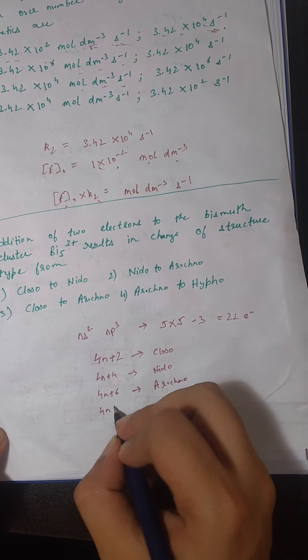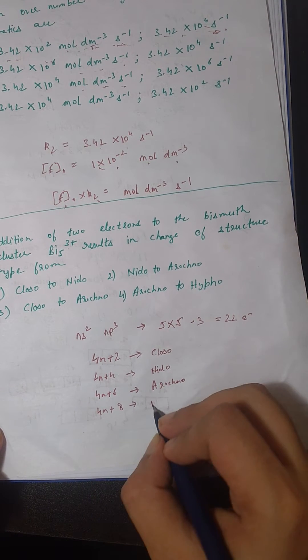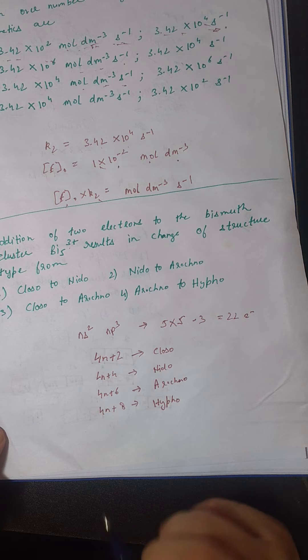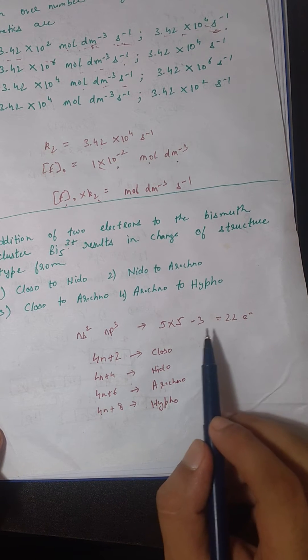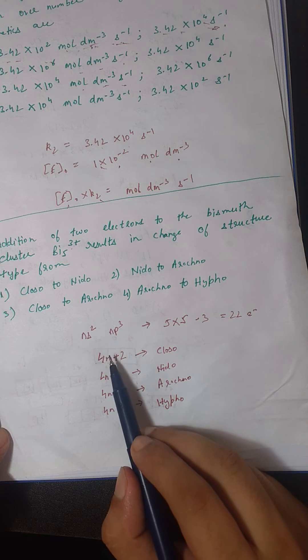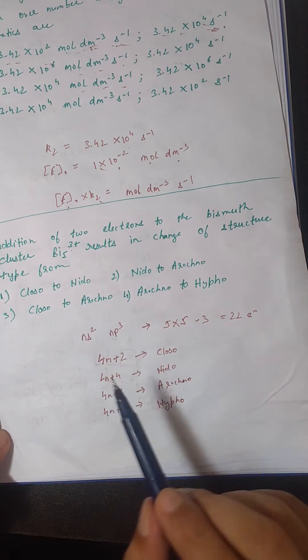And 4n+8 is hypo. N is the number of metals in the cluster, so in this metal cluster there are 5 bismuths.